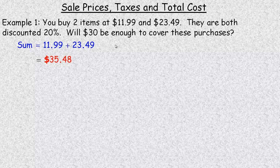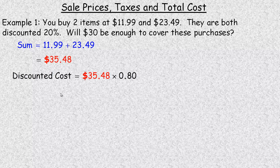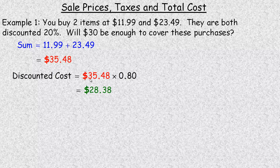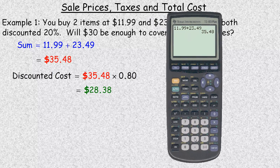Next we need to find what the cost is going to be after the 20% discount. If something is discounted 20%, then you're paying 80% of the original price. So the quicker way to calculate the discounted cost is to take that $35.48 and multiply it by 0.8. So $35.48 with 20% off is $28.38.